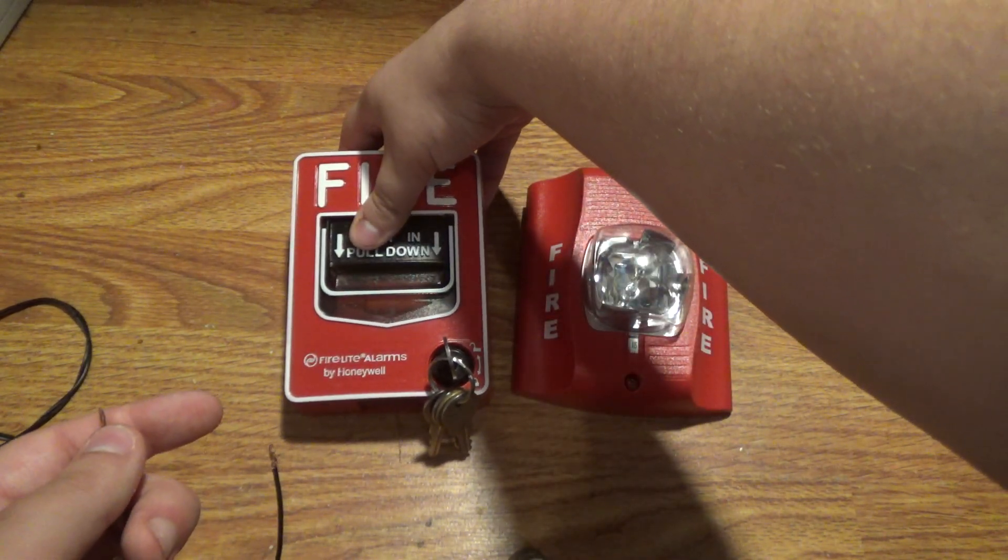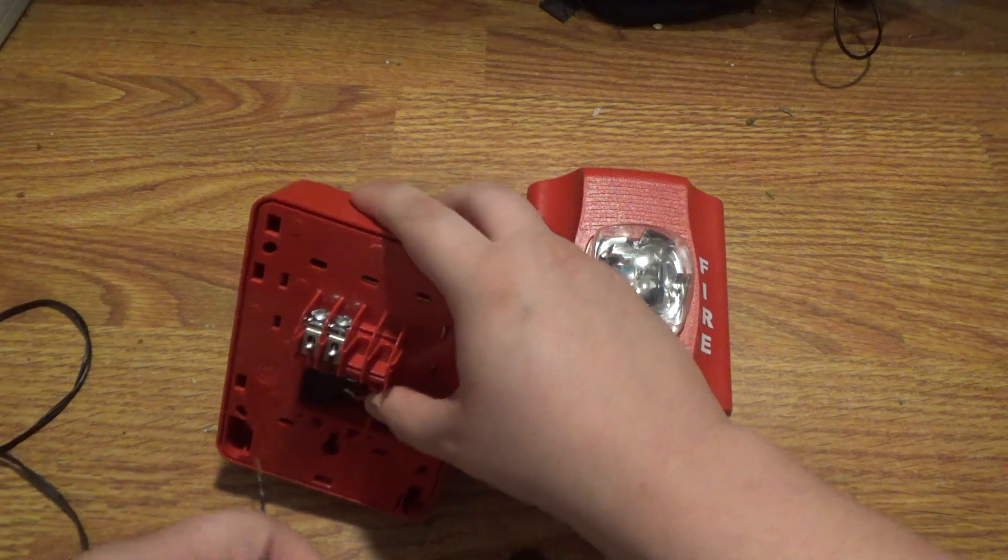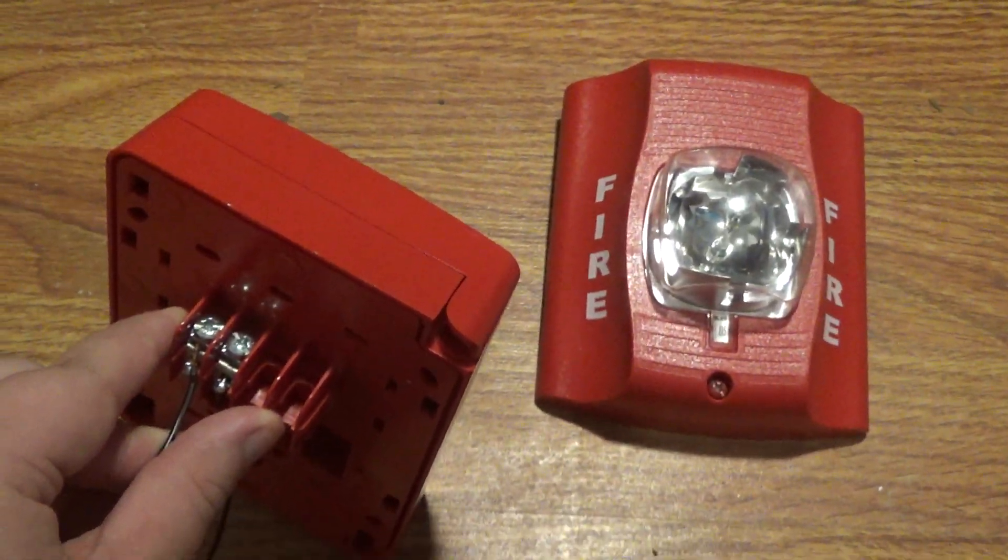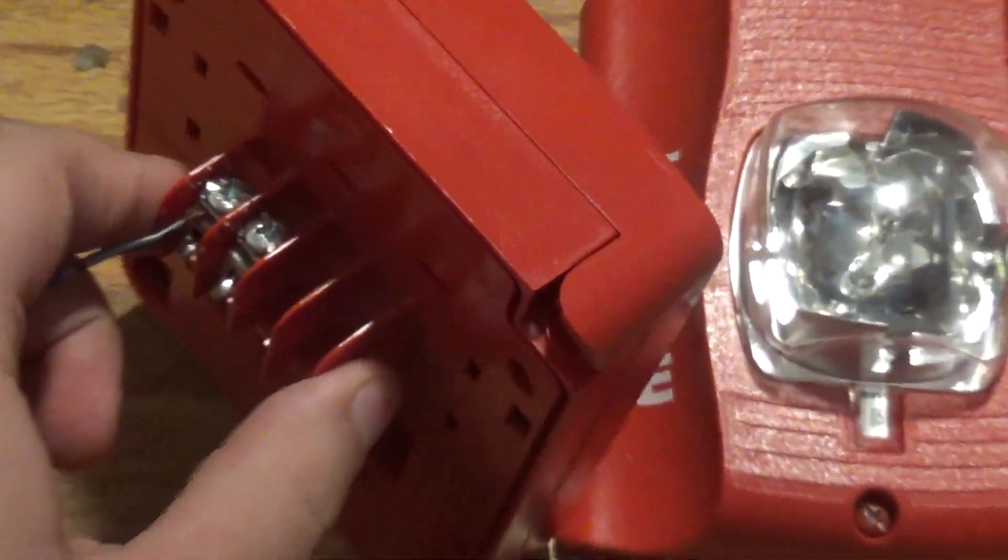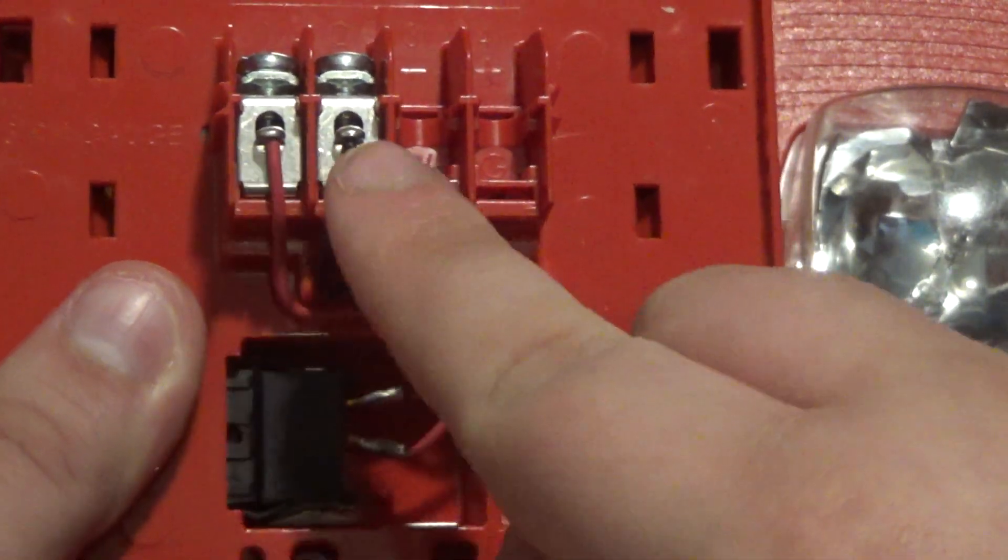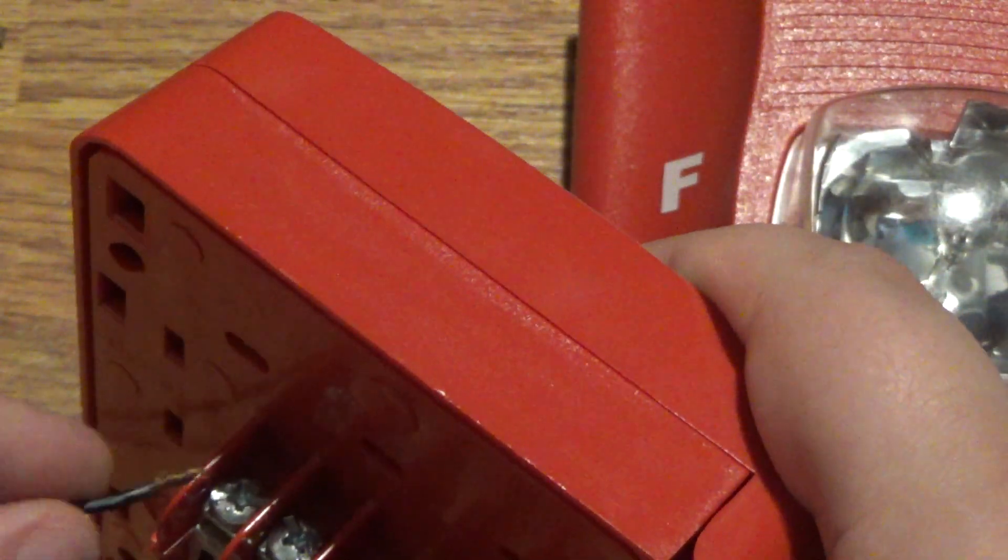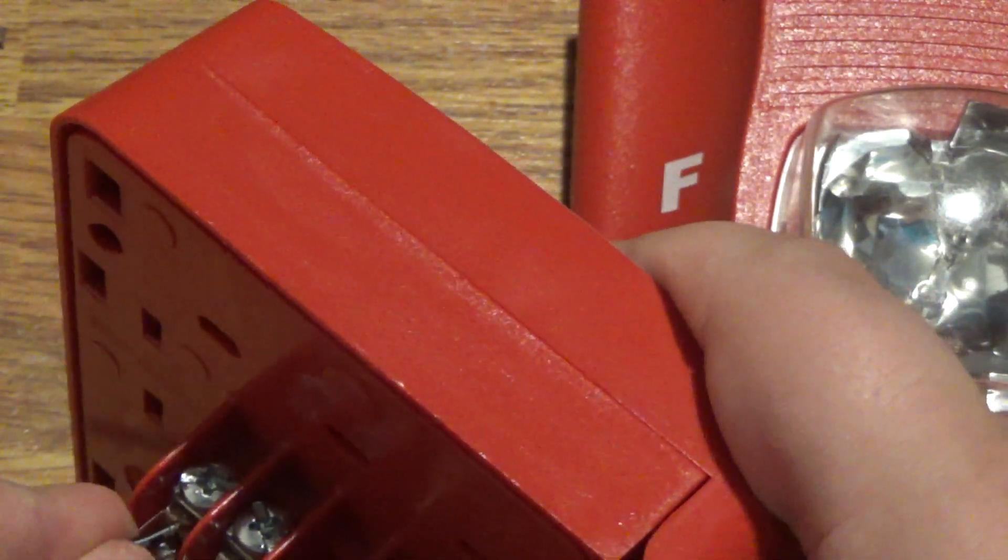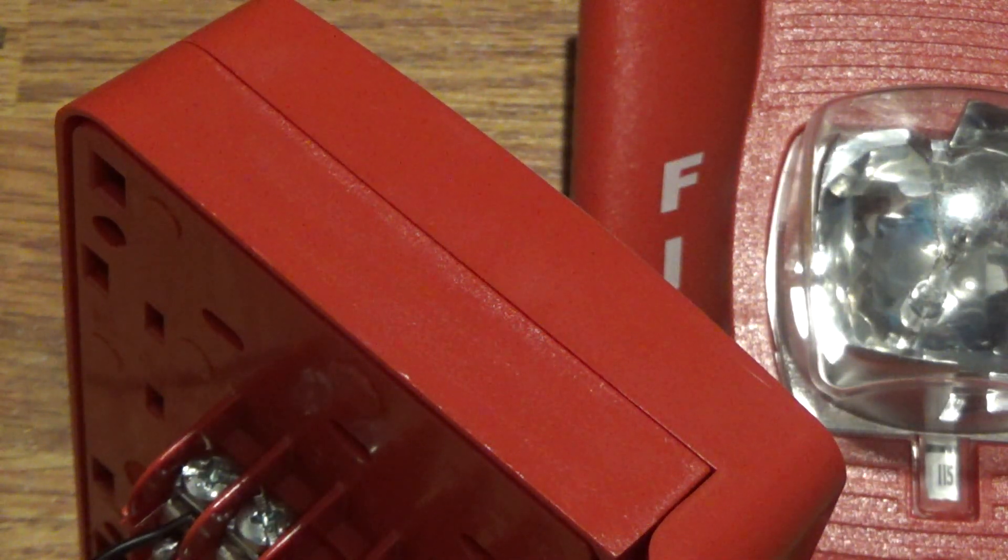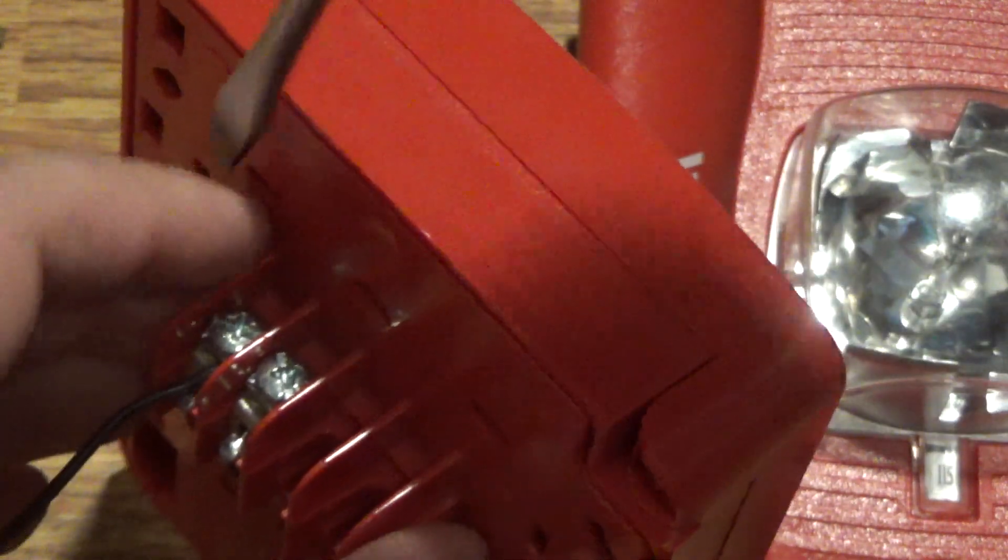So first thing you want to do is flip it over. And then you want to put your negative in the red terminal right here. Let me zoom in on that so you could see it. So what you want to do is, I know some people may get confused, but there's your negative, which is red and your positive is black. I know it's reversed, but oh well. So anyways, let's put your negative wire in here. And then, where did I put my screwdriver? Here it is. What you want to do is take a screwdriver and tighten it down.